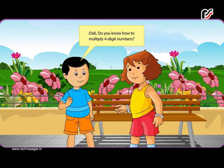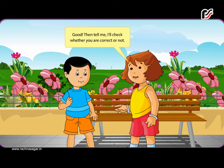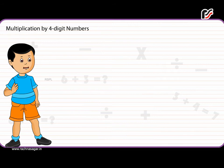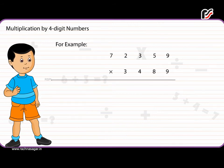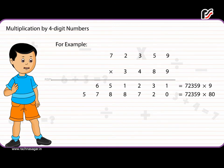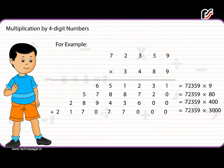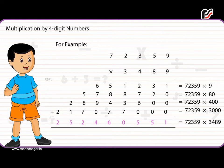Multiplication by four-digit numbers: For example, multiply 72,359 by 3,489. Step 1: 72,359 multiplied by 9. Step 2: 72,359 multiplied by 8. Step 3: 72,359 multiplied by 400. Step 4: 72,359 multiplied by 3,000. Final result: 72,359 multiplied by 3,489.